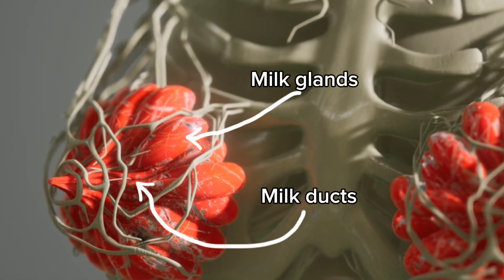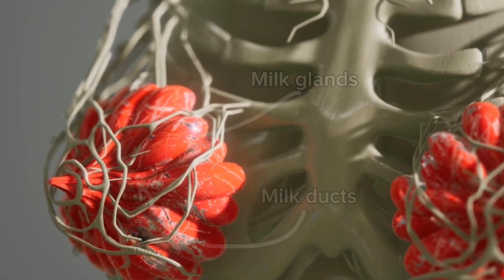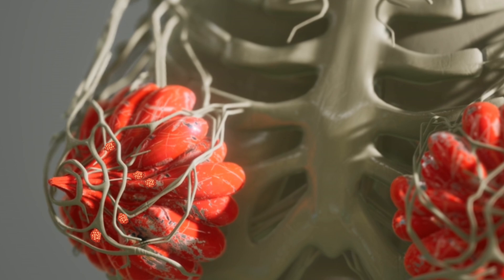Invasive ductal carcinoma occurs when some cells inside these ducts, instead of behaving normally, start growing abnormally and invade the surrounding breast tissue. The term invasive means these abnormal cells break out of the ducts and spread into the nearby areas.